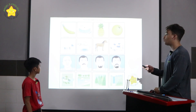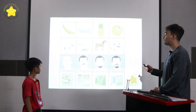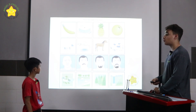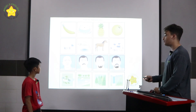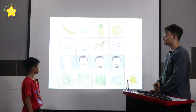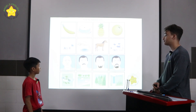Now this is called find the different ones. In row one, the cake is different because the banana, the pineapple, and the orange are all fruits. Can you please tell me which ones are different in rows two, three, and four? The fish is different because the sheep, the horse, and the cow all live on land.